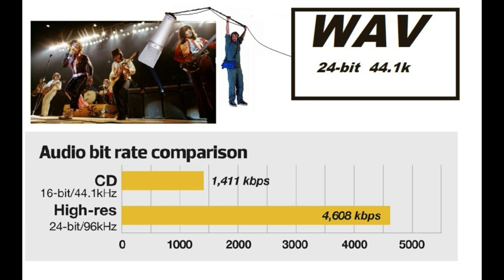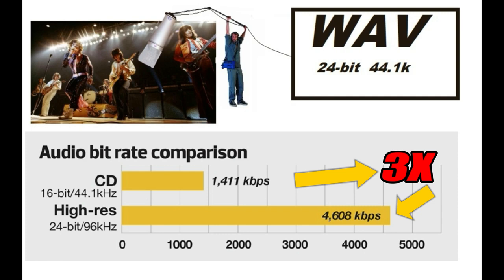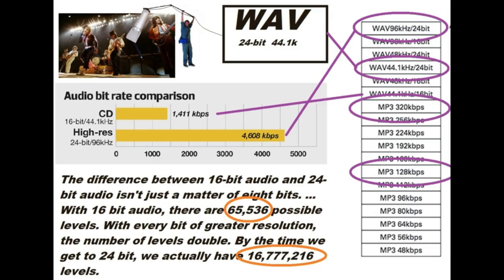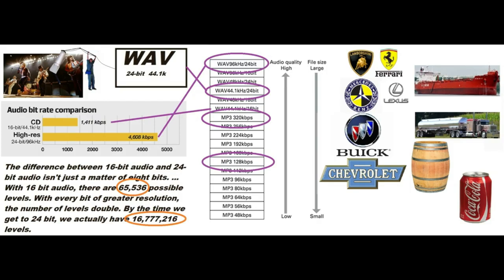Today's newest standard for high resolution is considered 24-bit at 96 kHz — this is about three times the resolution of a CD. Bit depth in audio is very interesting: with 16-bit audio you have 65,500 possible levels, while with 24-bit audio you have 16,700,000 possible levels. Although this is much more than the human ear can decipher, it is very useful for post-mixing and post-editing.